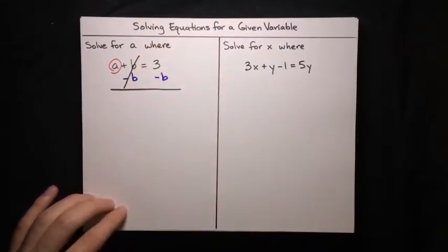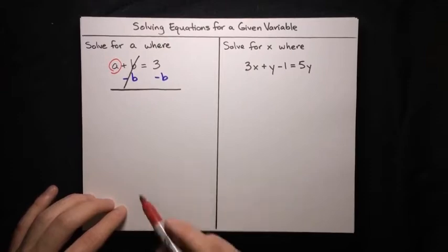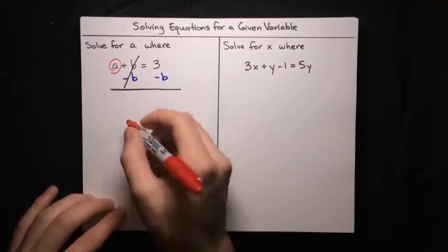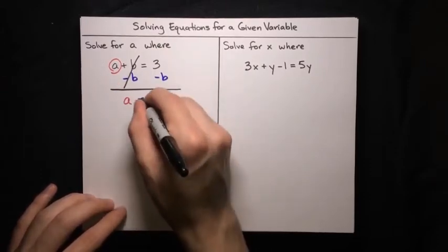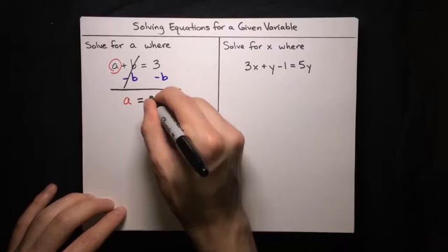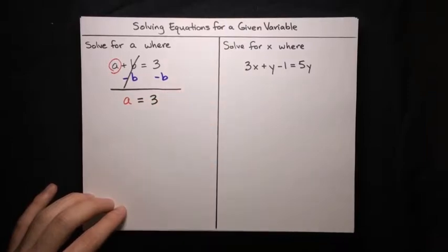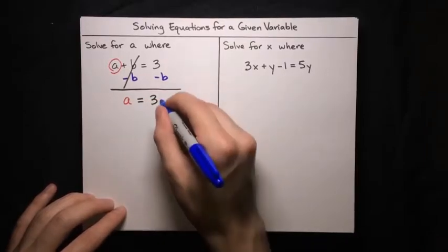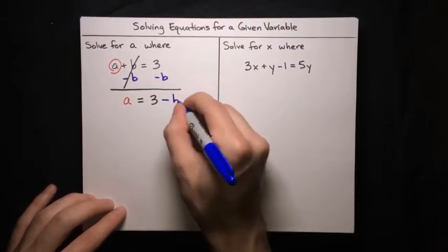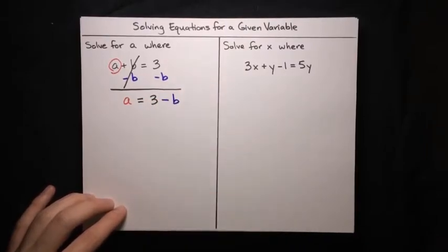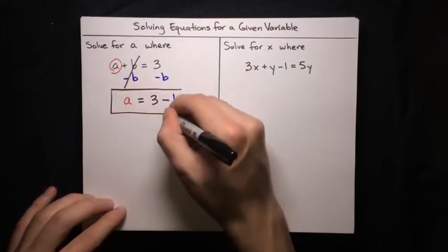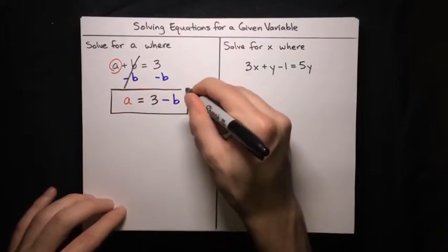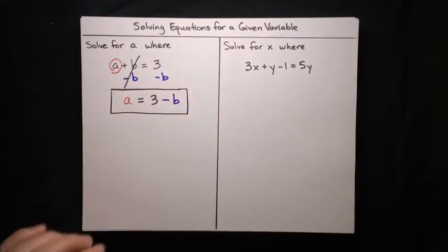The result is that the plus b and minus b cancel, and on the left hand side, all we've got left is our a. Then on the right hand side, we have our 3 as well as the minus b. And there we go, we've solved for a — a equals 3 minus b.